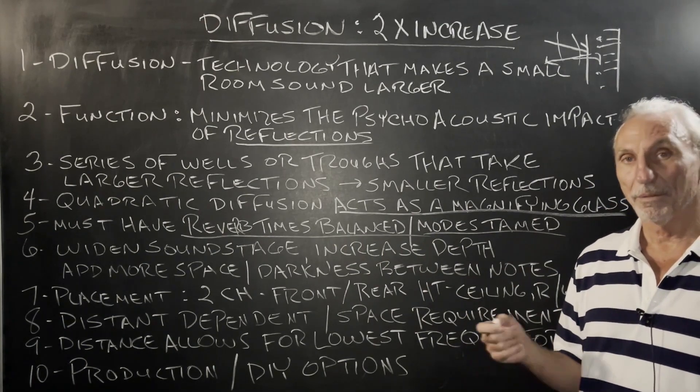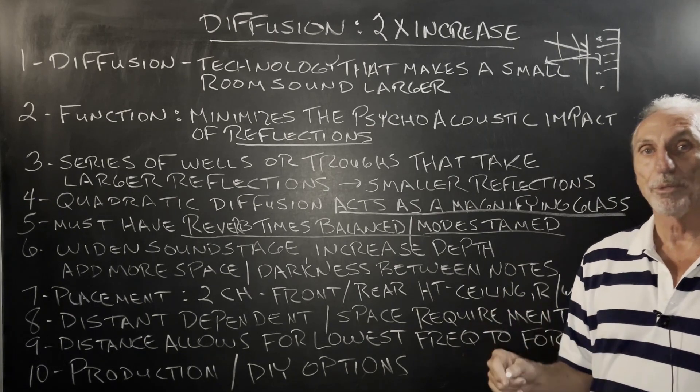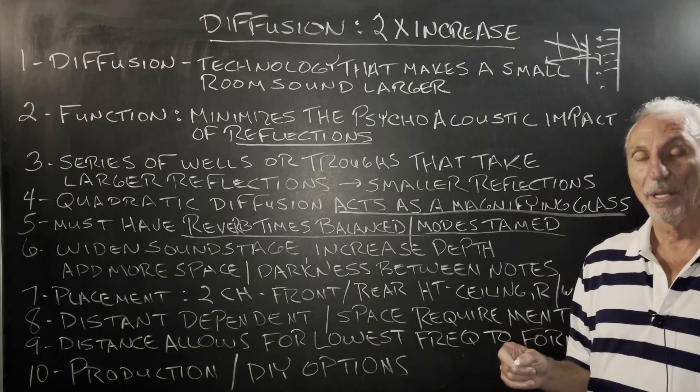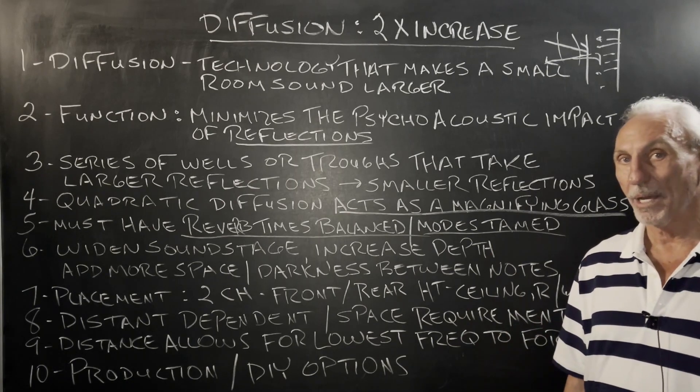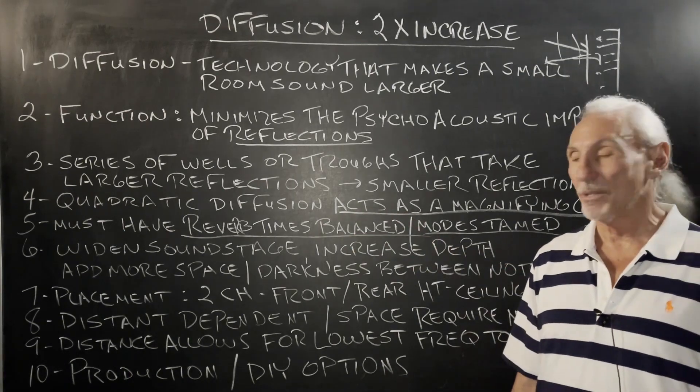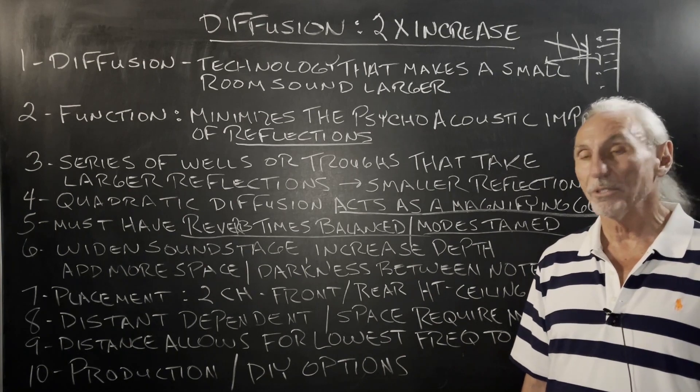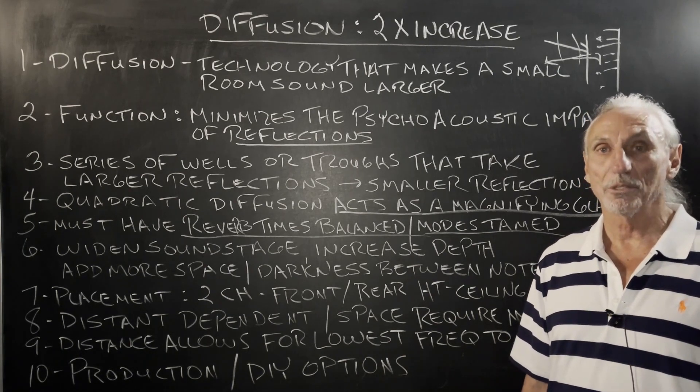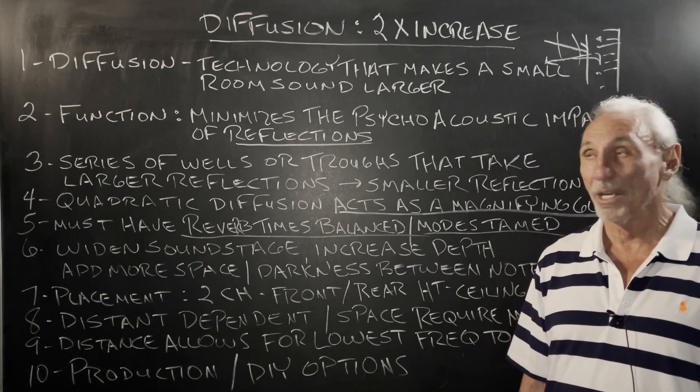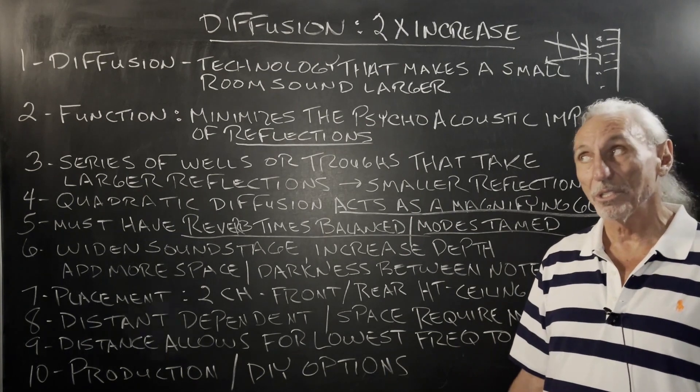So when we design rooms with diffusion in them, we always over-absorb a little bit because we know we're adding diffusion, which is going to punch up the reverb time a little bit. So you put it in a room with high reverb times. We get this with churches all the time. Well, we want to use diffusion. No, you don't. Diffusion increases reverberation times. That's the last treatment you want to use. And you don't need to take a large room and make it sound larger, which is another function, psychoacoustic function of diffusion.